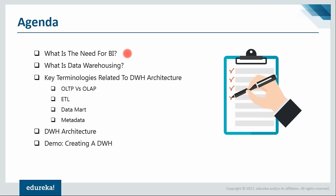The first topic I'll be talking about is what is the need for business intelligence, and after that I will talk about the need for data warehousing. Business intelligence is one of the most important aspects for any company to grow well, and data warehousing is among the most important activities of business intelligence. These two things are interlinked - you can think of data warehousing as a kind of subset of business intelligence.